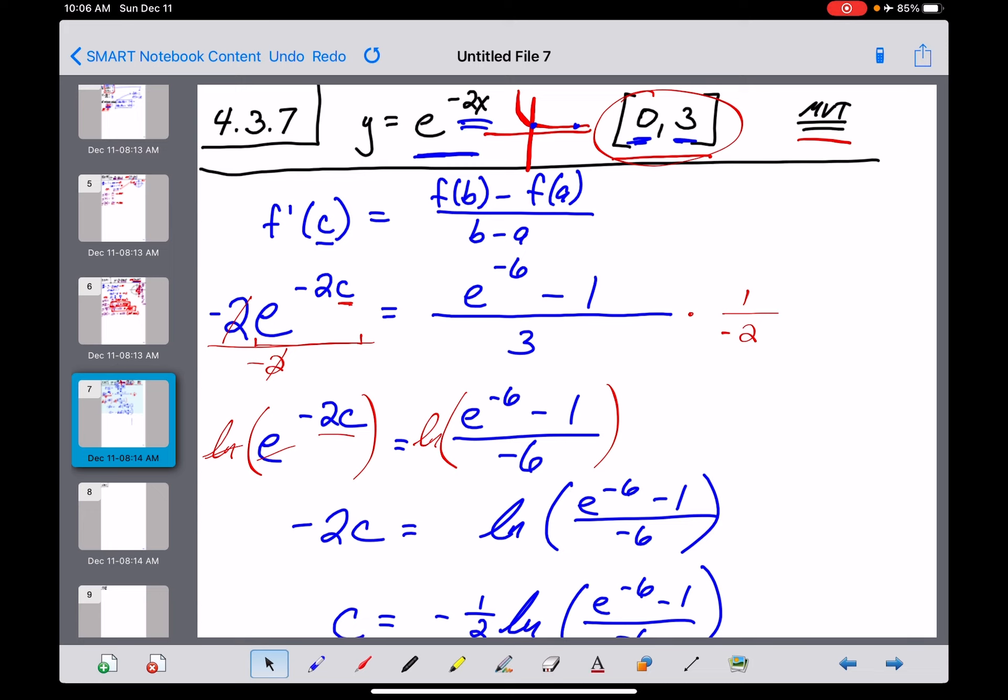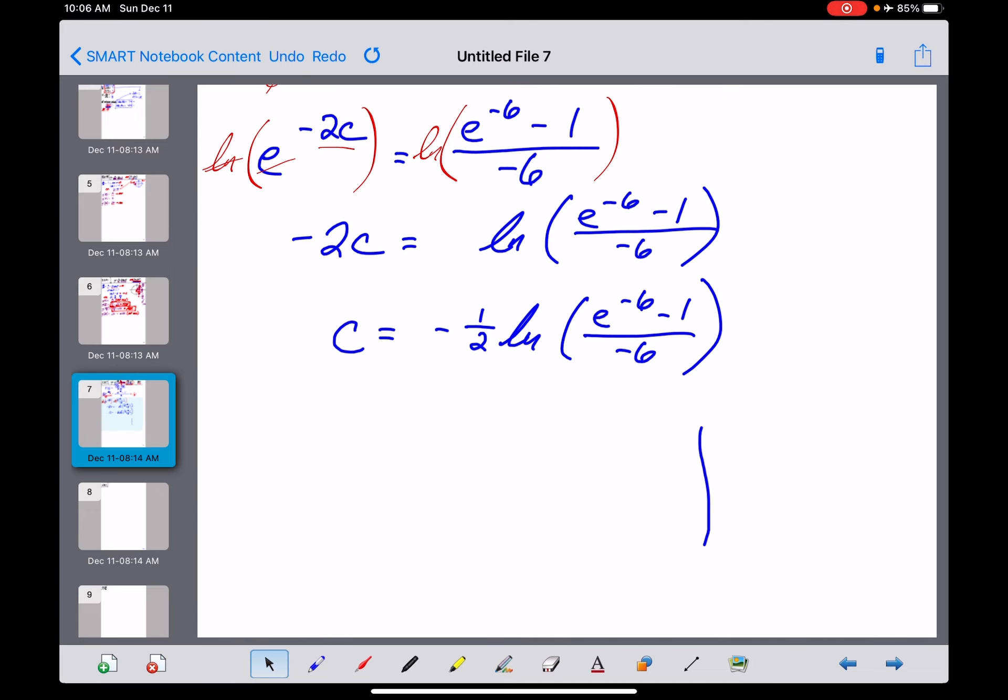Now, the one thing I was going to say before I looked here is that it wouldn't shock me if maybe they had rewritten the solution just a little bit differently here as negative 1 half times the natural log of, and what they might have done is changed the order in the numerator, which is basically the opposite, made that a positive 1 minus e to the negative 6th, and then also changed the sign of the denominator and made that a positive 6. That's a little bit nicer of a way to do it, but I would be fine with either one of these two answers here,